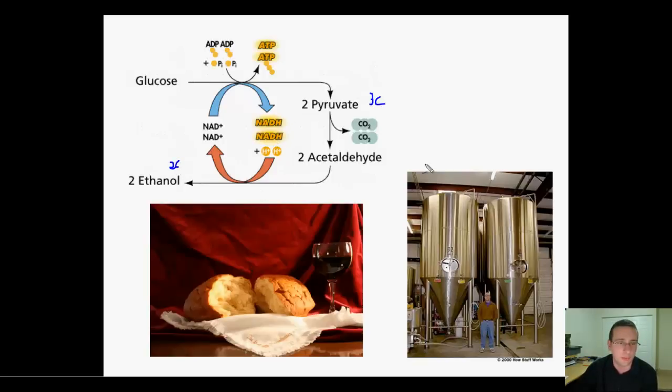Pyruvate is a three-carbon molecule and ethanol is a two-carbon molecule, so you release carbon dioxide during this process. Since this is two pyruvates, you make two carbon dioxides. That's why when you put yeast in bread the bread grows, and when you put yeast in drinks like beer you get the fizz.